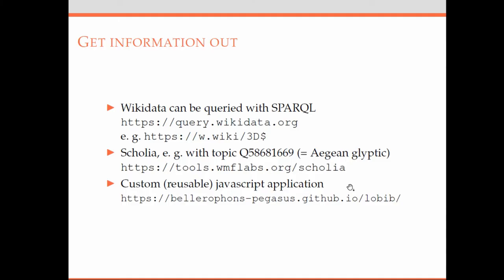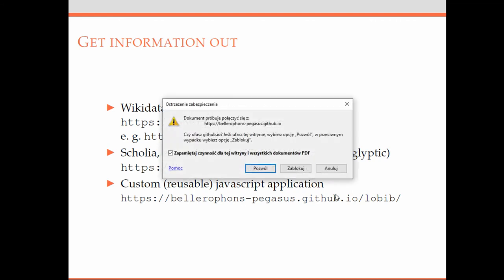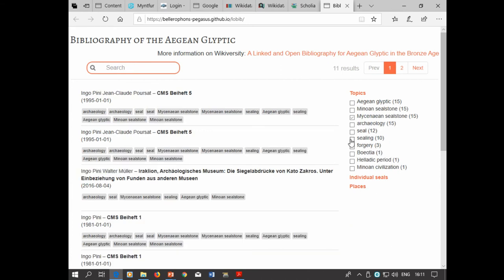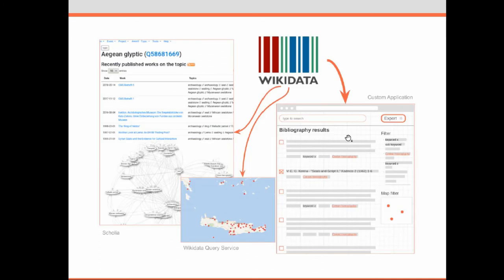Since it's SPARQL and you can use JavaScript, you can build your own dedicated application, which I did. It's possible to filter, and I still have more functions in mind to improve and extend it. The idea is that this custom application should be generic enough for anybody else to reuse it for references related to other topics — any reference marked with 'Aegean glyptic' will appear in it.